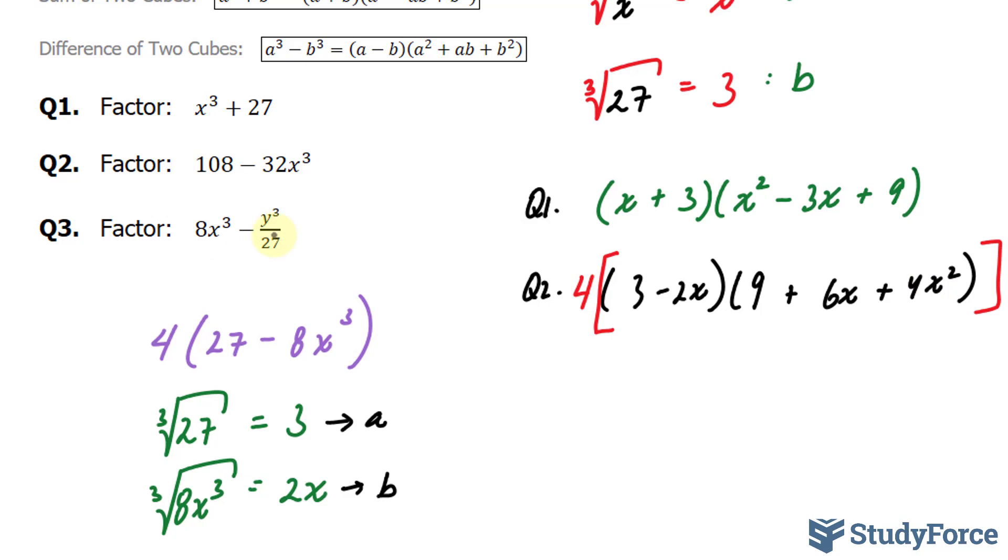Finally, in question 3, we're expected to factor 8x to the power of 3 minus y to the power of 3 over 27. Let's start by seeing if these terms are perfect cubes. If we cube root that, we end up with 2x, and that's evident from the previous question as well. So that is a perfect cube.